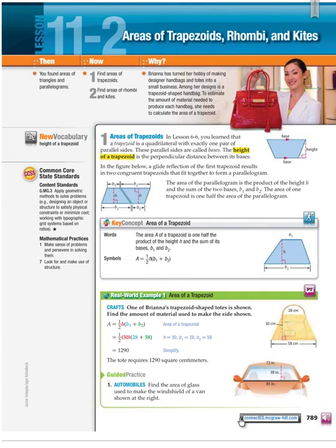Okay, we're going to look at section 11-2. This is going to be a very easy and short section for you, I do believe. We've talked about trapezoids, rhombi, and kites before, especially the kites, but let's see what we've got going on.